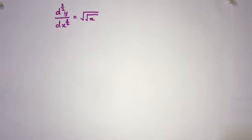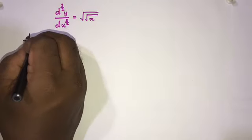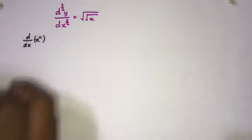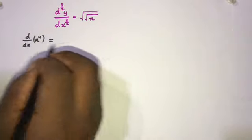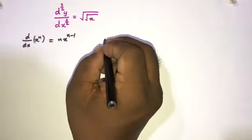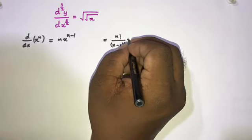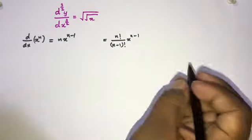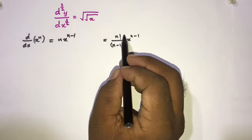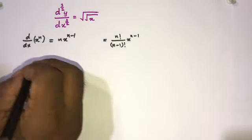Before solving the question, I am going to take the general equation for fractional differentiation of x^n. First, we take d/dx of x^n — traditional differentiation using the power rule — giving n·x^(n-1). We can write this as n!/（n-1)! · x^(n-1), since n! = n·(n-1)!.